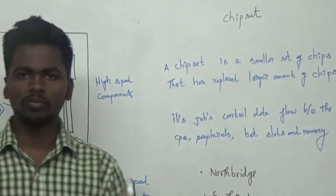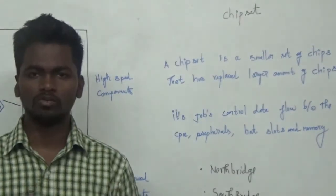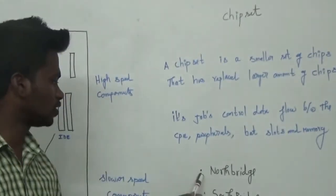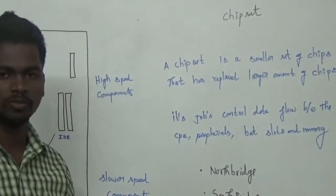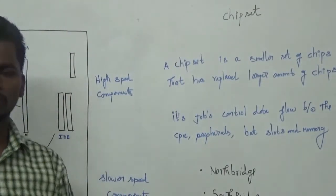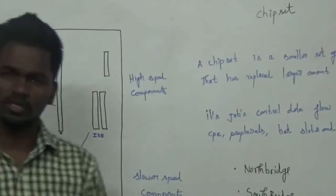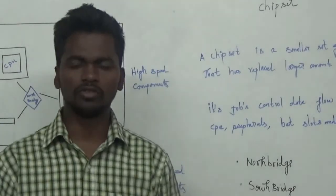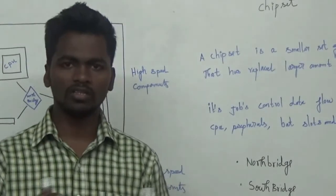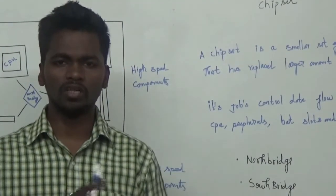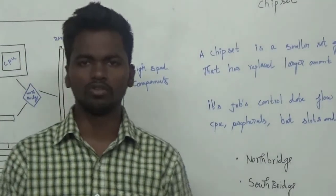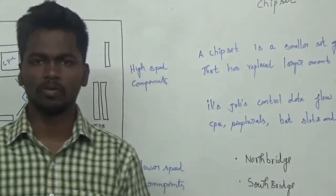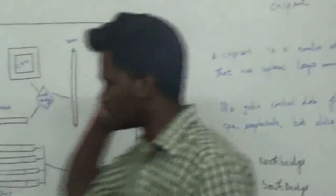There are two types of chips: one is North Bridge and South Bridge. North Bridge, South Bridge — this is also confusing. We will clear up North Bridge and South Bridge.